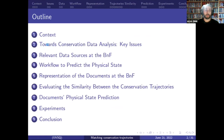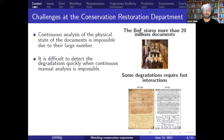The context of this work is an ongoing project to predict the physical state of documents at the BNF. The conservation processes aim to conserve the physical state of documents and maintain their availability to be requested by readers. The selection of documents to be treated is related to the degradation risk and the cost of the conservation process. The objective is to detect the documents most at risk and treat them. The BNF contains almost 20 million documents which need continuous physical state checking.